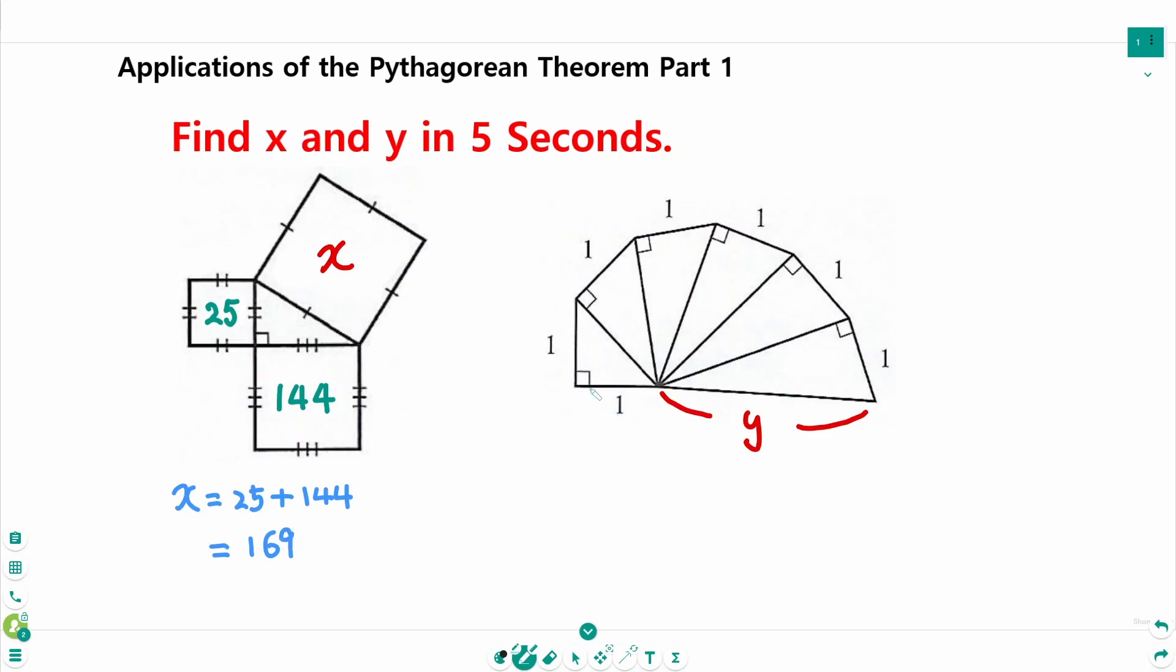The second one: 1, 2, 3, 4, 5, 6, 7, so y equals square root of 7. Now let's check if this answer is correct.